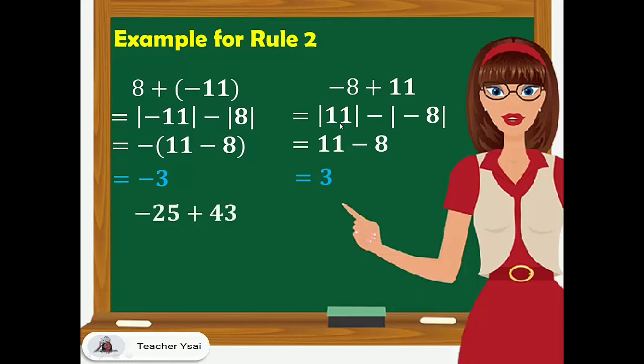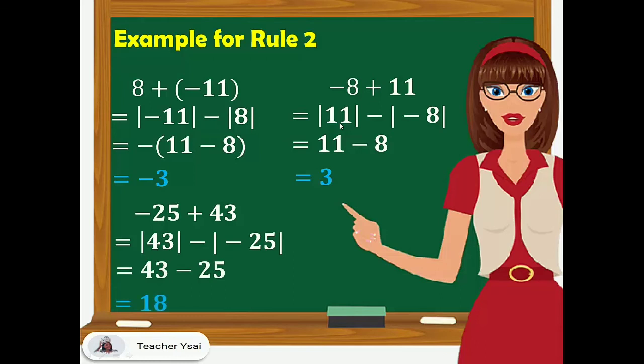Another example: negative 25 plus 43. Again, we subtract the smaller absolute value from the bigger absolute value: the absolute value of 43 minus the absolute value of negative 25. Since 43 has the bigger absolute value and its sign is positive, we have 43 minus 25, which equals 18.